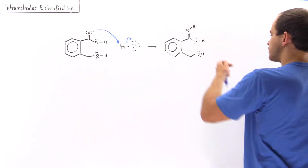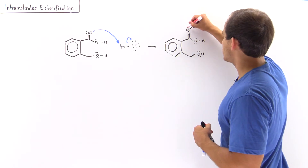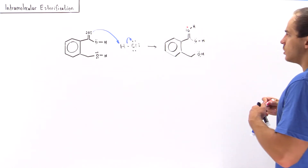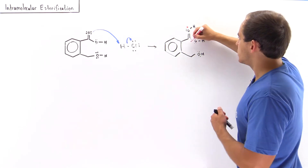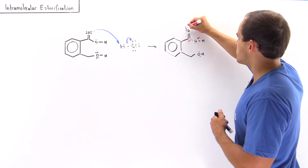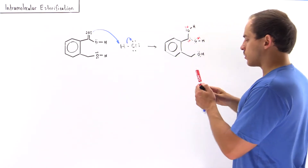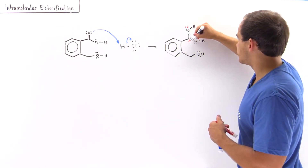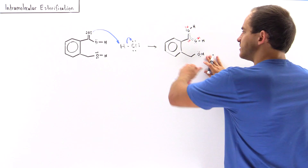This intermediate is resonance-stabilized because we have a positive charge that can be delocalized onto this carbon as well as onto this carbon. We represent this using resonance symbolism. So this intermediate is resonance-stabilized.